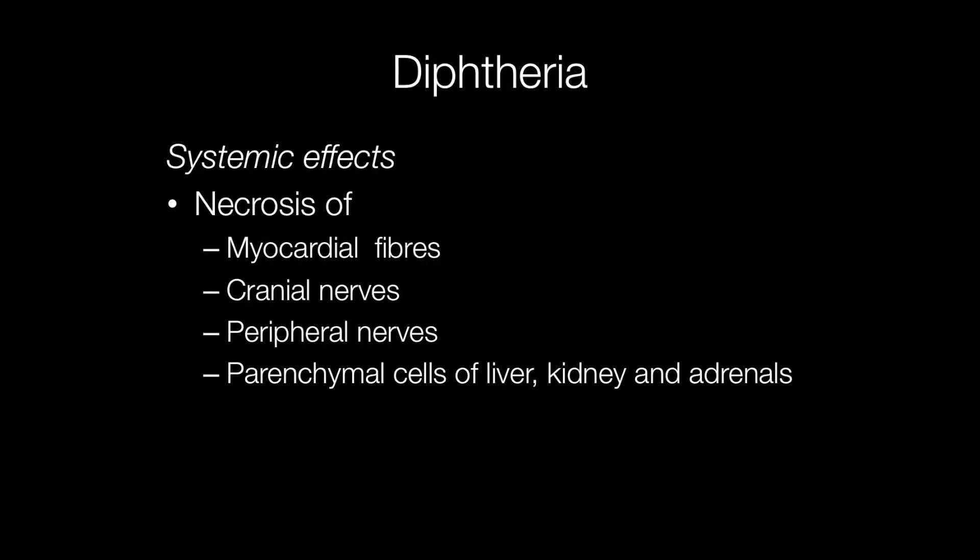Systemic effects include necrosis of myocardial fibres, cranial nerves, and peripheral nerves, producing a neuropathy. Diphtheria toxin can also cause necrosis of parenchymal cells of the liver, kidney, and adrenals.